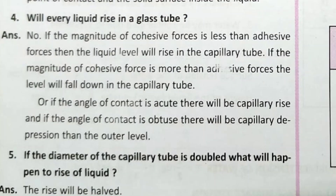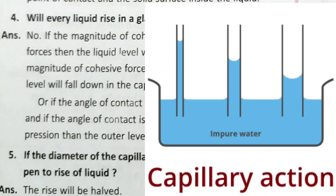Next question: If the diameter of the capillary tube is doubled, what will happen to the rise of liquid? If the diameter of the capillary tube is doubled, the height of rise will become half. So double the diameter means half the rise. You can look at the diagram — different diameters give different rising levels.